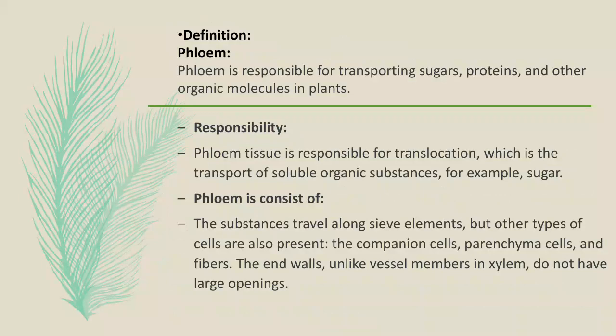Phloem is responsible for transporting sugars, proteins, and other organic molecules in plants. Phloem tissue is responsible for translocation, which is the transport of soluble organic substances such as sugar. Phloem consists of substances that travel along sieve elements, but other types of cells are also present: companion cells, phloem cells, and fibers. The end walls, unlike vessel members in xylem, do not have large openings.